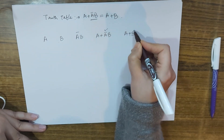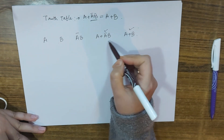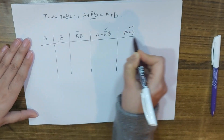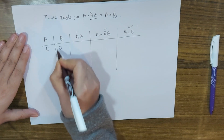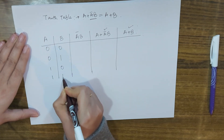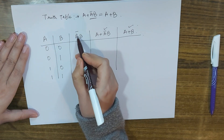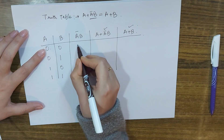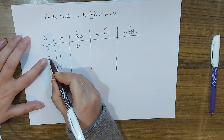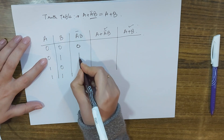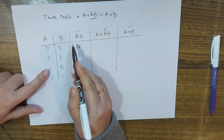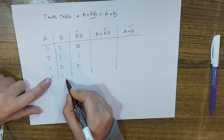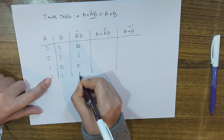With two variables, the input combinations are: 0,0 — 0,1 — 1,0 — and 1,1. For A-complement B: when A=0, A-complement=1, so 1 AND 0 = 0; then 1 AND 1 = 1; when A=1, A-complement=0, so 0 AND 0 = 0; and 0 AND 1 = 0.